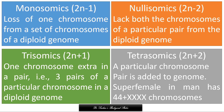In human beings, aneuploidy shows a variety of syndromes like Klinefelter syndrome, Turner syndrome, Down syndrome, and Patau syndrome. Klinefelter syndrome is due to trisomy of the sex chromosome. Turner syndrome represents the monosomic situation where the chromosome number is 46 minus 1, that is 45. Down syndrome is due to trisomy of the 21st chromosome, and Patau syndrome is due to trisomy of the 13th chromosome.